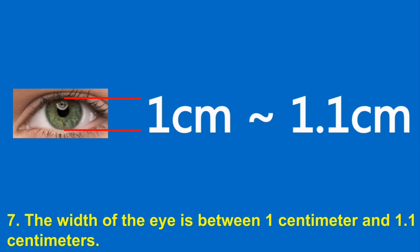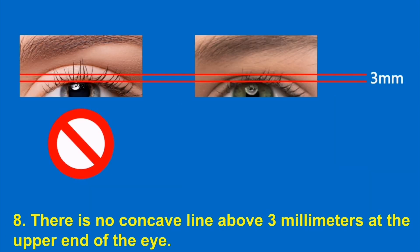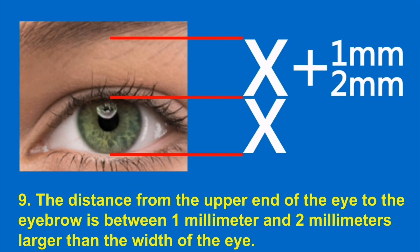7. The width of the eye is between 1 centimeter and 1.1 centimeters. 8. There is no concave line above 3 millimeters at the upper end of the eye. 9. The distance from the upper end of the eye to the eyebrow is between 1 millimeter and 2 millimeters larger than the width of the eye.